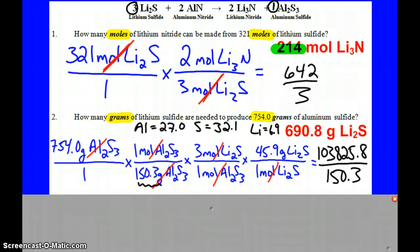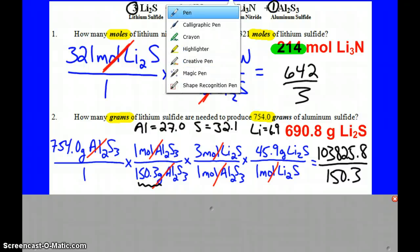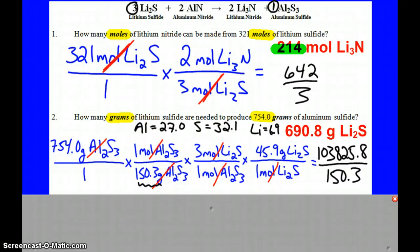Now if you did the short version, then again you would start with the known piece of information, 754 grams of aluminum sulfide. And then on the bottom of the mega ratio, I guess, you'd have 150.3 times 1. On the top you would have the 3 times the 45.9. Okay, so you can kind of see all the shortcut does is get rid of the one mole things and kind of smooshes them together. But either way, you should get 690.8.